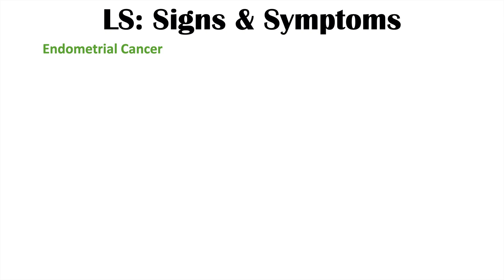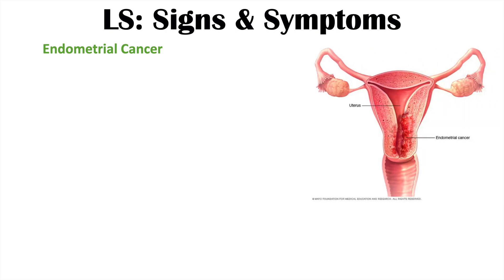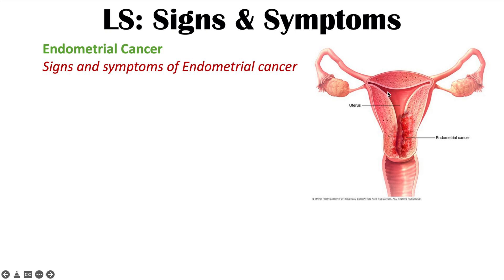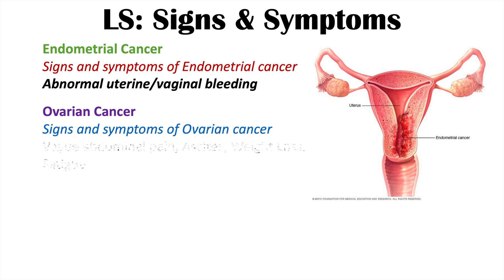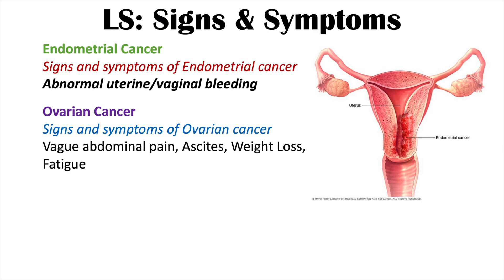Other cancers in Lynch syndrome include endometrial cancer — the E in the CEO mnemonic. The endometrium is the lining within the uterus, and signs of endometrial cancer often include abnormal uterine or vaginal bleeding, particularly in patients who have already undergone menopause. Ovarian cancer is also the O in CEO, with signs including abdominal pain, ascites, weight loss, and fatigue.